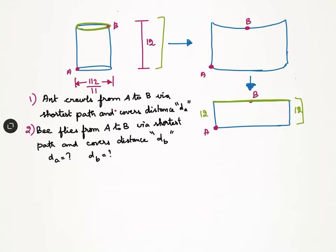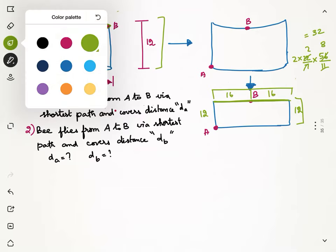If I have to find what is the circumference of the circle which is 2 into pi into r, if diameter is 112 by 11, radius is 56 by 11. So, I can see that my circumference is 2 into 2 into 8 which is 32. If my circumference is 32, I can see that my B is at midpoint. So, this left side is 16 and this right side is 16.